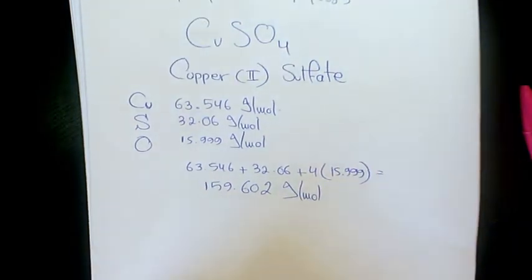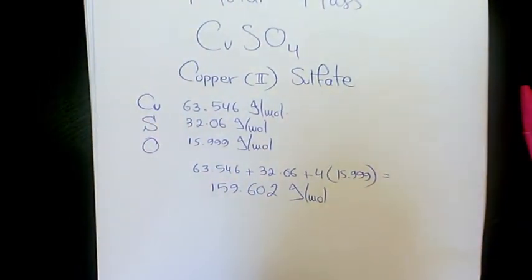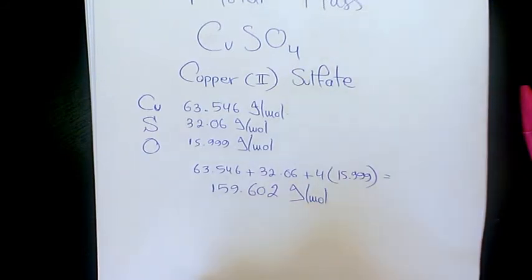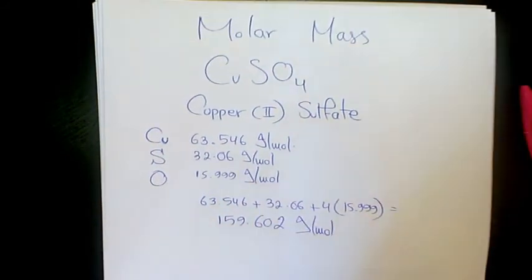It means that 1 mole of Copper Sulfate contains almost 160 grams, and if you have 2 moles, it's going to be 2 times 160 grams or 320 grams. That's how you find the molar mass of Copper(II) Sulfate.